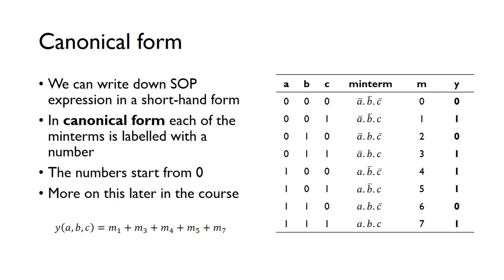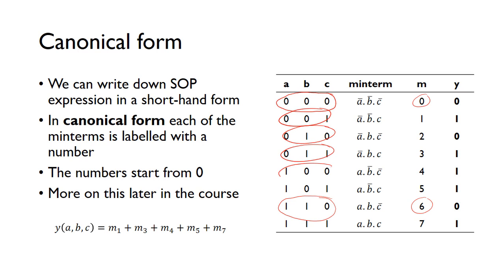The sum of products expression can be quite longhand to write down, so you can write it in what's known as canonical form. Each of the min terms is given a number — these numbers are essentially binary values. For example, 0, 0, 0 in binary is just 0 in decimal, and 1, 1, 0 in binary is 6 in decimal. Each min term is labelled by its decimal equivalent. So this is min term 0, that's min term 1, 2, 3, 4, 5, 6, 7, and so on.